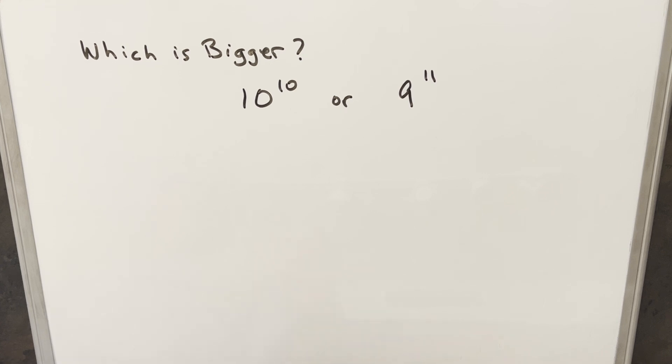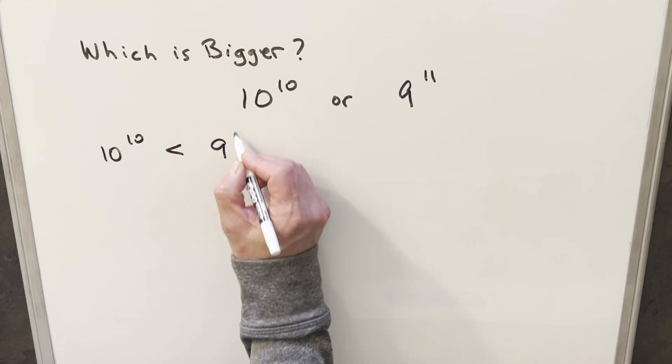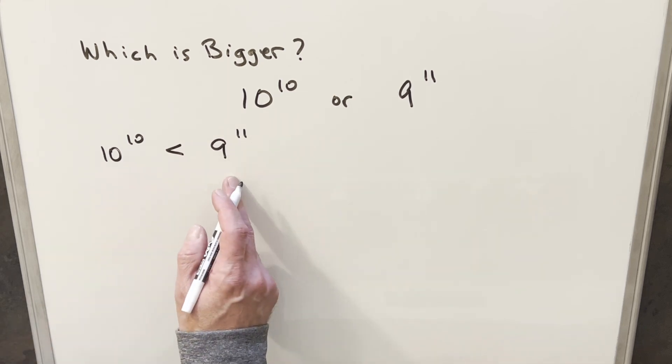It's not much of a guess because I already did this problem, but let's just start with saying 10 to the 10 is going to be less than 9 to the 11, and then I'll go about trying to show this.